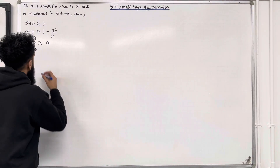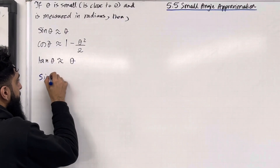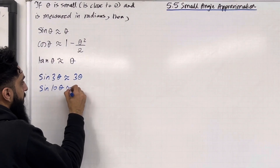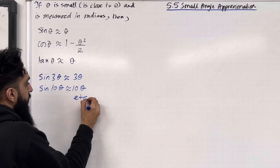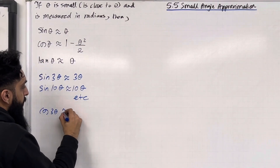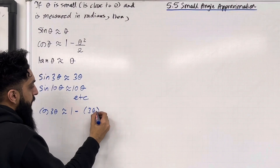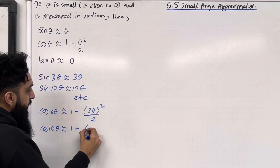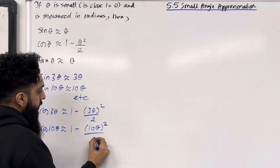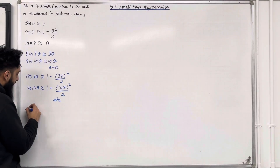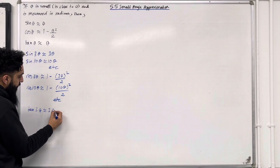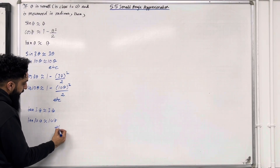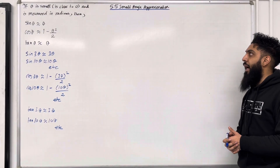Let's have a look at some variations. If theta is small, sine 3θ is approximately 3θ, sine 10θ is approximately 10θ. Cos 3θ is approximately 1 minus (3θ)² over 2, and cos 10θ is approximately 1 minus (10θ)² over 2. Tan 3θ is approximately 3θ and tan 10θ is approximately 10θ. These are the key facts of 5.5 small angle approximation.